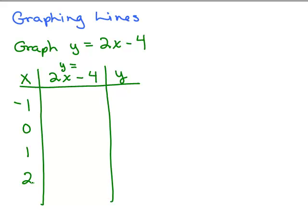So, what we're going to do is plug in negative 1 for x. So, I'm going to have 2 times negative 1 minus 4, and I'm going to simplify that. Negative 2 minus 4 is negative 6. This is the ordered pair negative 1, negative 6.